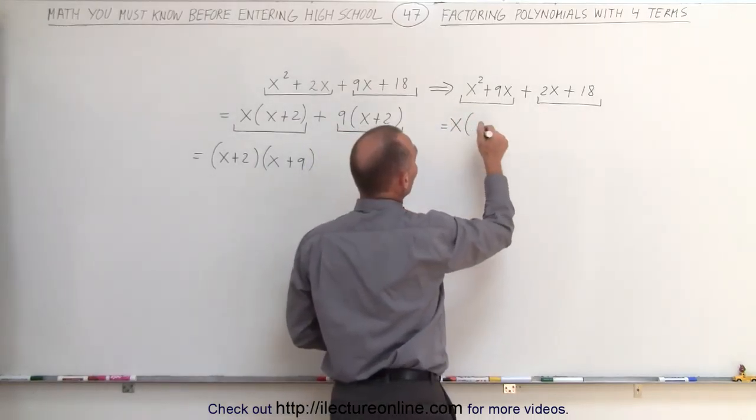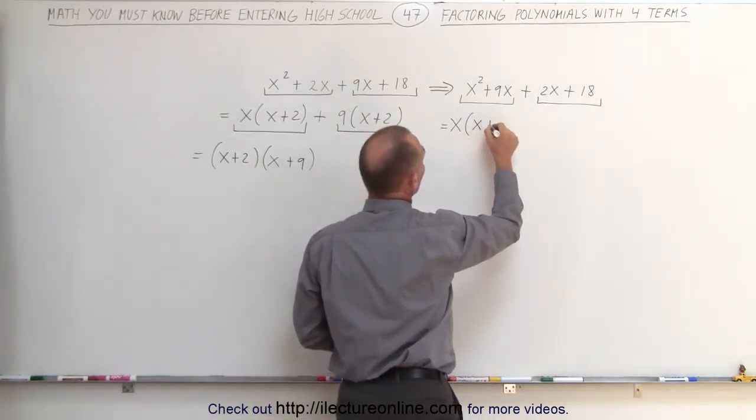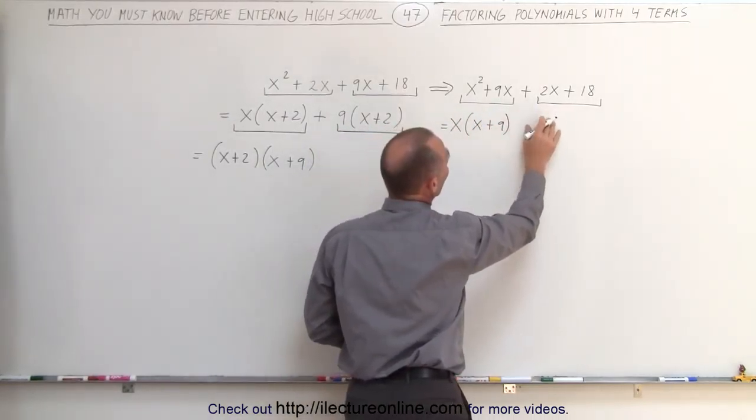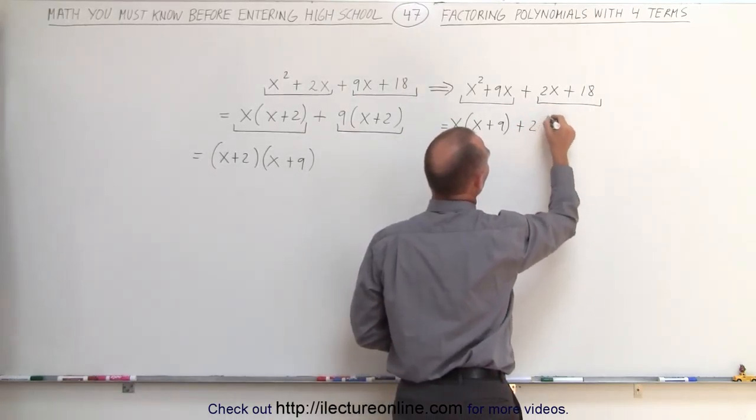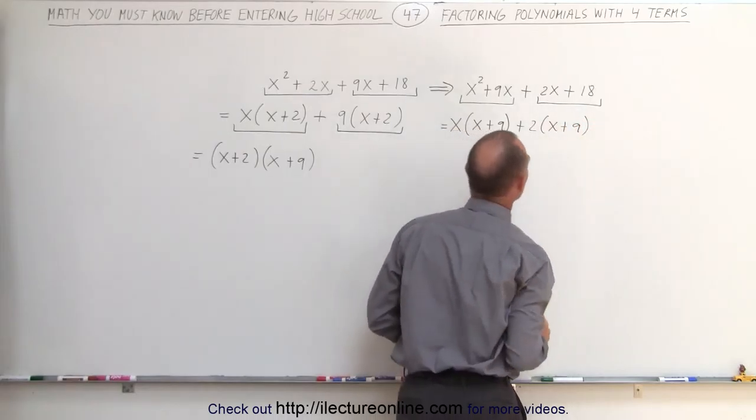Here we factor out an x, so we get x(x + 9), and here we're going to factor out the number 2, which is common, so plus 2 times (x + 9) is the remainder.